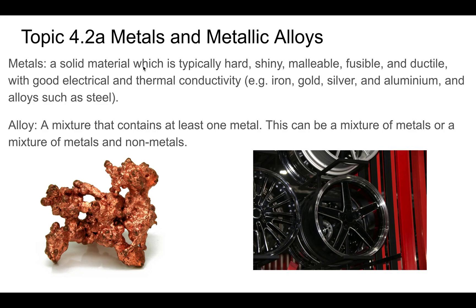Hi guys, today we're going to talk about metals. We'll get to metallic alloys in the next lecture. So first of all, what is a metal? A metal is a solid material which is typically hard, shiny, malleable, fusible, and ductile, and has good electrical and thermal conductivity. Malleable means it can be formed into different forms. Fusible means it can be welded together. Ductile means that you can draw it into a wire. It conducts electricity and it conducts heat.